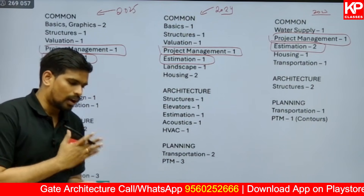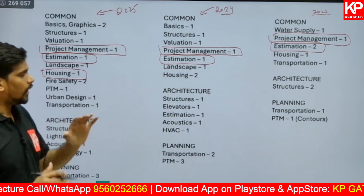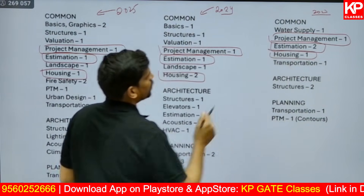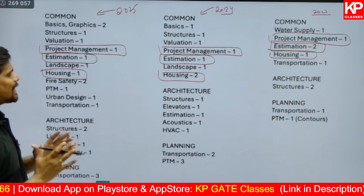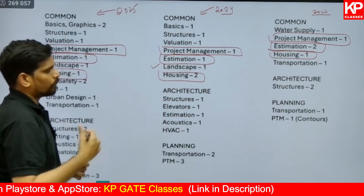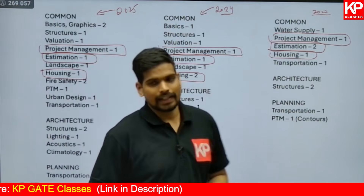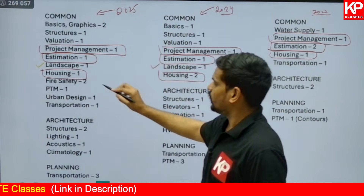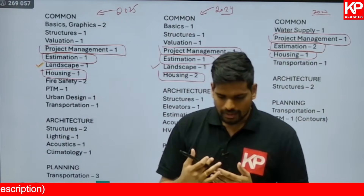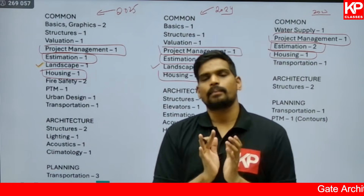For Housing, numericals are focused on two main areas: FAR (Floor Area Ratio) calculation and densities, and the proportion of HIG, MIG, and LIG housing units. There are also questions sometimes on housing demand, need, shortage, and percentage calculations. There were two numericals from Housing in the 2024 paper, and a Housing numerical appeared in 2023 as well. Along with Project Management and Estimation, these three are the most certain topics. Landscape is also important — runoff calculation appeared in both 2024 and 2025.